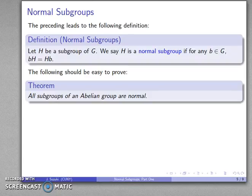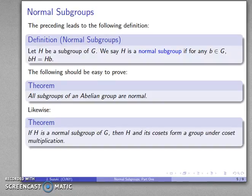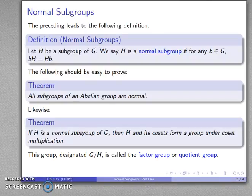All subgroups of an abelian group are normal. Likewise, if H is a normal subgroup, then H and its cosets form a group under coset multiplication. This particular group, because coset formation is a lot like finding the quotient G divided by H, we call that the factor group or the quotient group.